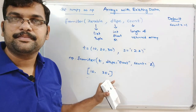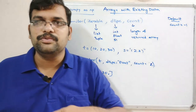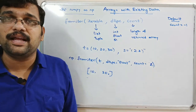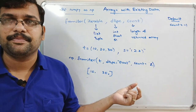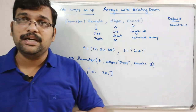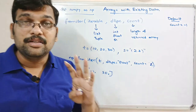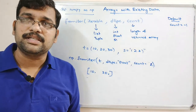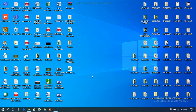These three functions — `asarray`, `frombuffer`, and `fromiter` — are used to create an n-dimensional array from existing data, converting into the required data type with parameters like count and offset. I will now show the execution of all three functions in the Jupyter notebook interpreter.